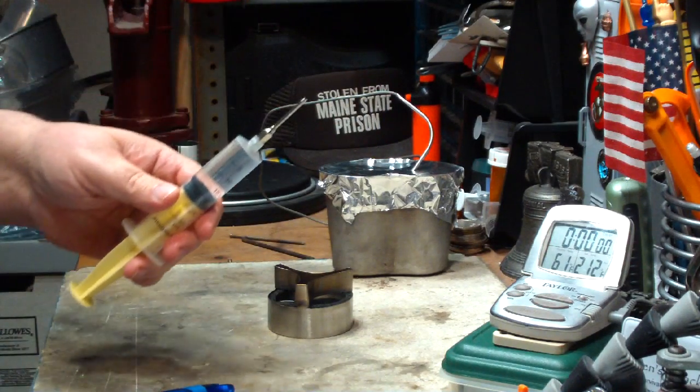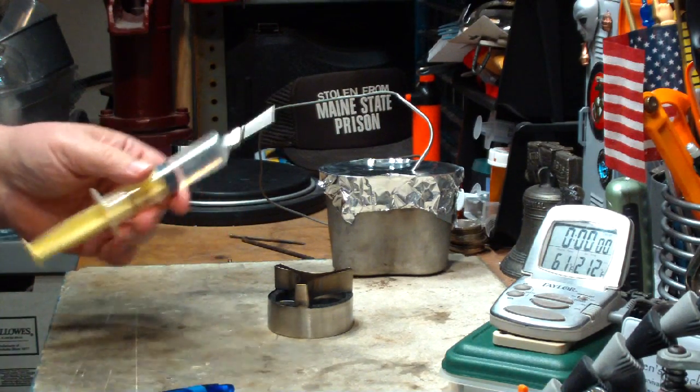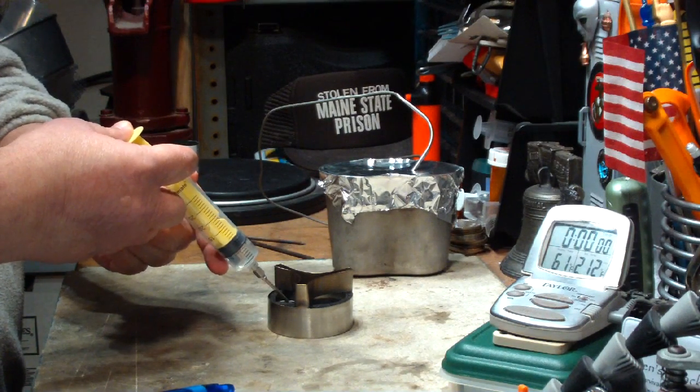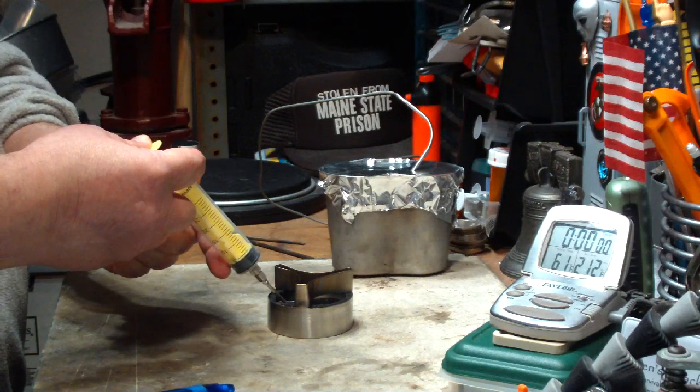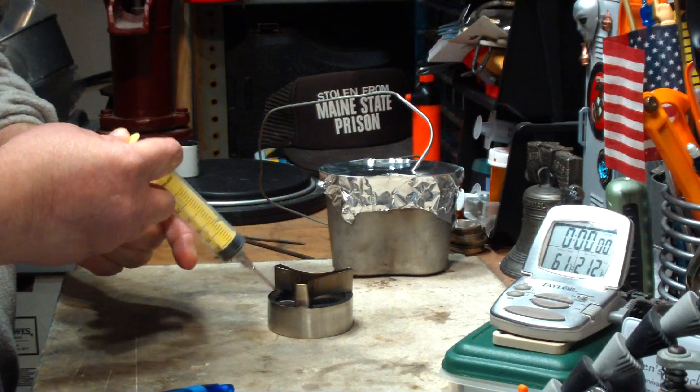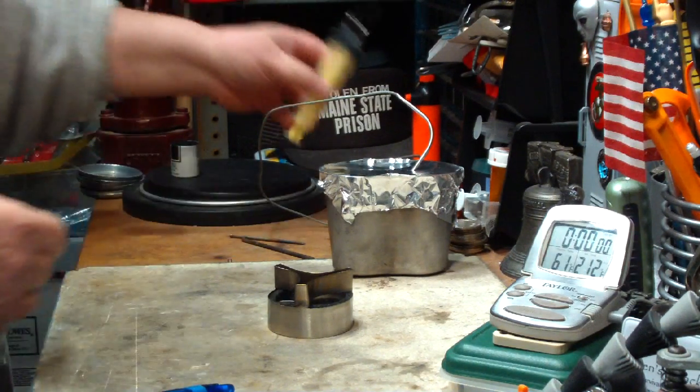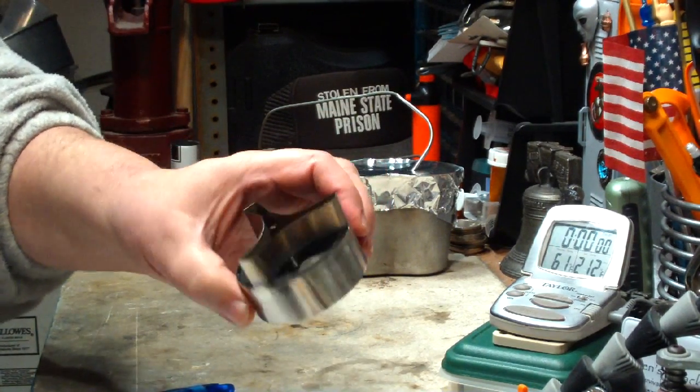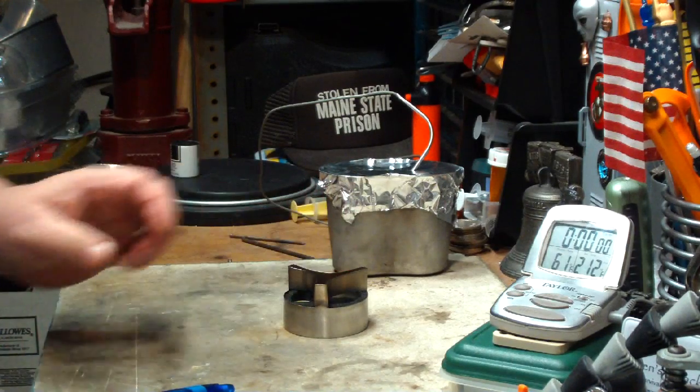I have the same 18 milliliters of methanol like what I used yesterday. Let's put that in the burner. And the thing is, that really soaks up the methanol. There's none left floating in there. It's all absorbed into the carbon felt.